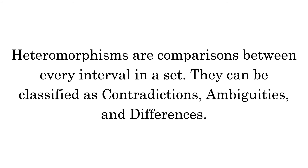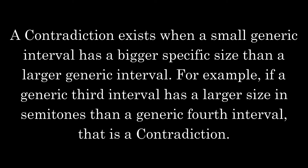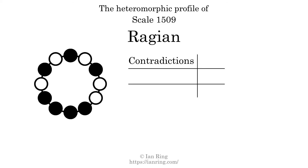Heteromorphisms are comparisons between every interval in a set. They can be classified as contradictions, ambiguities, and differences. A contradiction exists when a small generic interval has a bigger specific size than a larger generic interval. For example, if a generic third interval has a larger size in semitones than a generic fourth interval, that is a contradiction. The number of contradictions in this scale is 19.